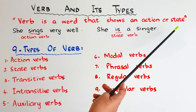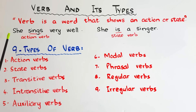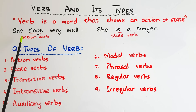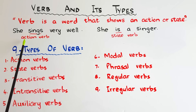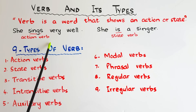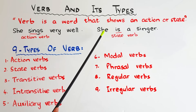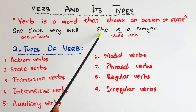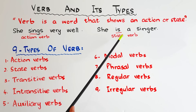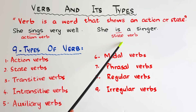See these examples. 'She sings very well' — in this sentence, the word 'sings' is an action verb; you can see this action, you can see the movements. However, in the sentence 'she is a singer,' we do not have any action, but we still have a verb, and this verb is a state verb. These two types are the basic types of verbs.